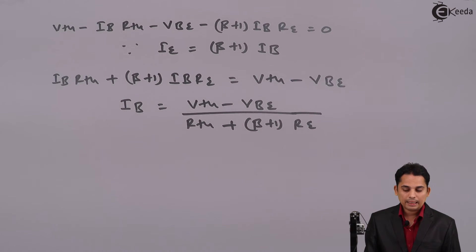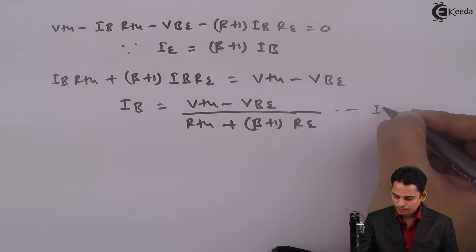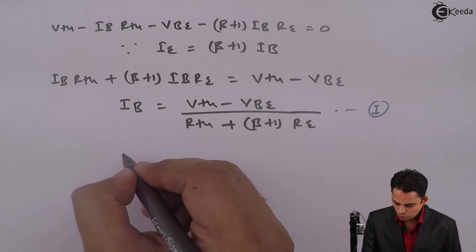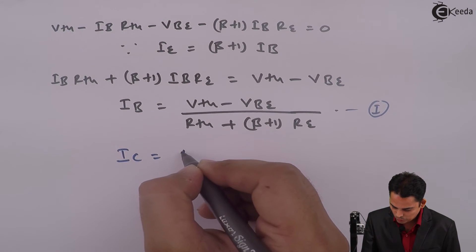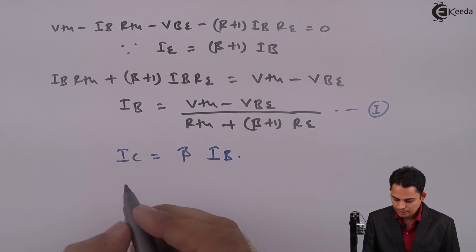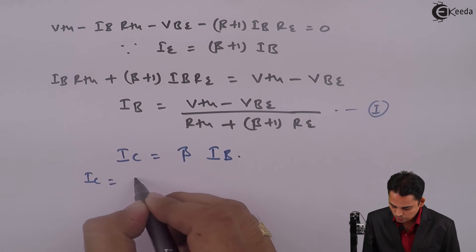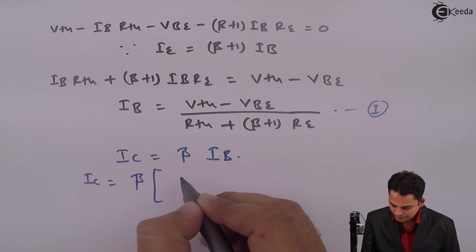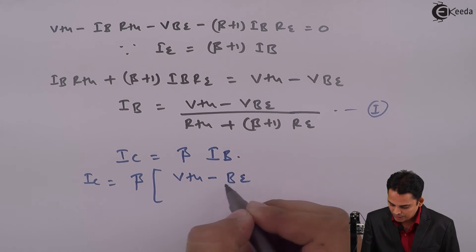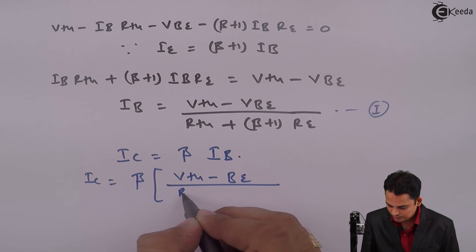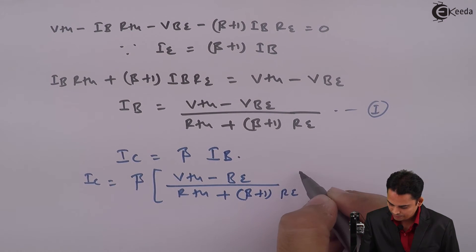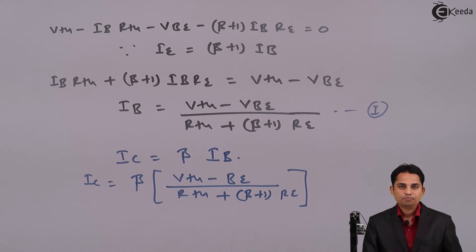We know that collector current IC is given as beta times IB. So we will write: IC is equal to beta times IB. Hence, IC is equal to beta multiplied by equation number 1, that is (Vth minus Vbe) divided by (Rth plus (beta plus 1) times RE).